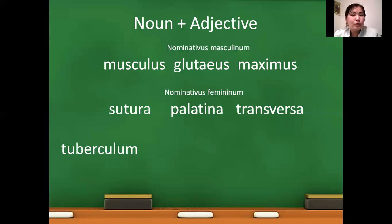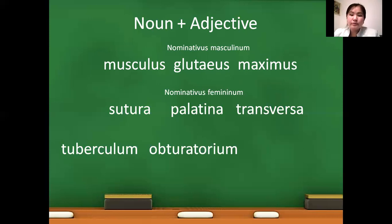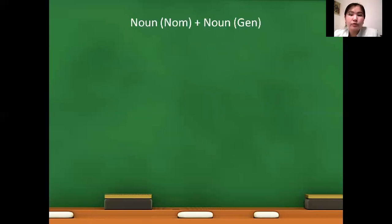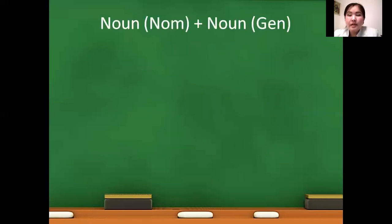Tuberculum — a neutrum gender noun, with the -um ending. Obturatorium — a neutrum gender adjective with -um ending. And posterius — a comparative neutrum form. So all the terms in this word combination, tuberculum obturatorium posterius, are used in nominativus neutrum form. Now let's look at noun plus noun structure terms.